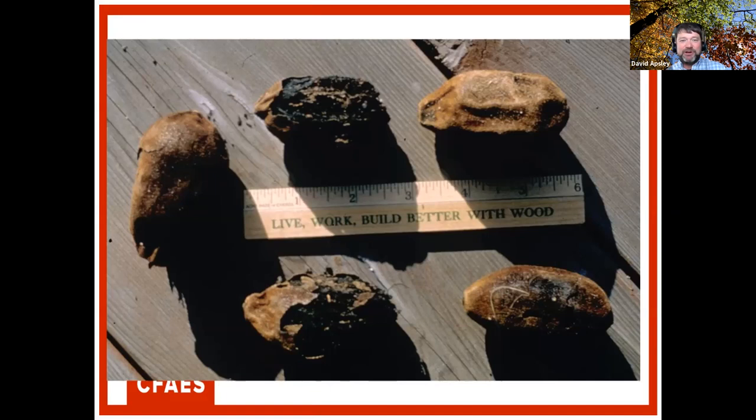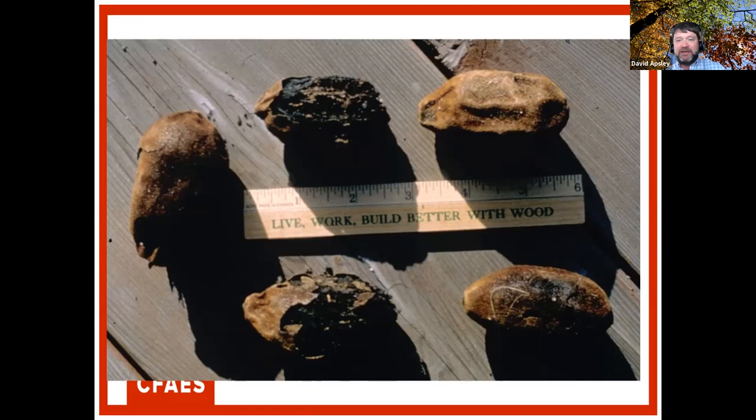Butternut fruits look similar to black walnut but are much more elongated and egg-shaped. Persimmons still hanging on the tree have attracted gray fox, coyotes, and lots of deer to Dave's game camera this year.